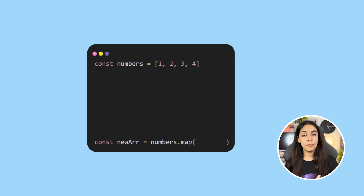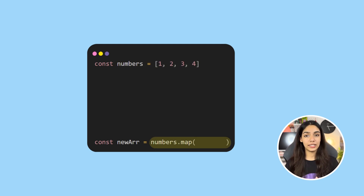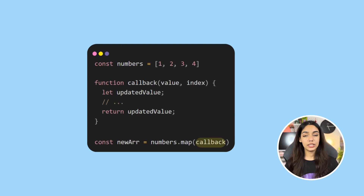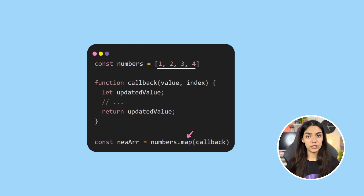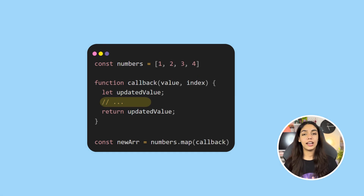When you call map on an array — let's say we have an array called numbers and we do numbers.map — since map returns a new array, I'm going to assign it to const newArray. This map function accepts a callback function, which is called for every element of the array. The callback receives two values: the element and the index.